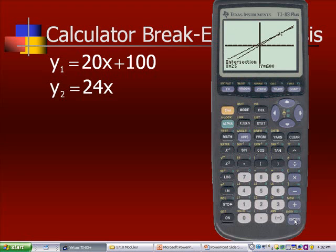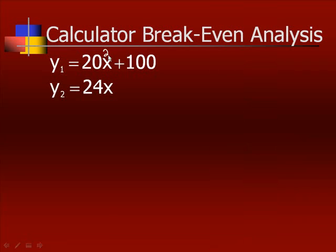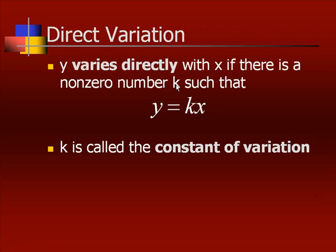Now, what does the 600 mean? Well, if you plug 25 into this one, you get 20 times 25, which is 500 plus 100. So to produce 25 tapes, the cost is $600. When you sell 25 tapes here, 24 times 25 is 600, which means the revenue is 600. That is your break even point.